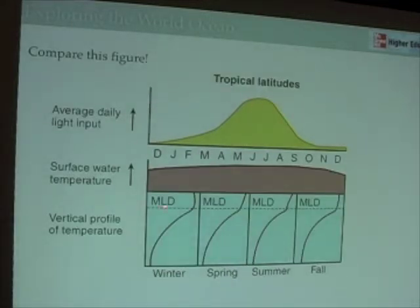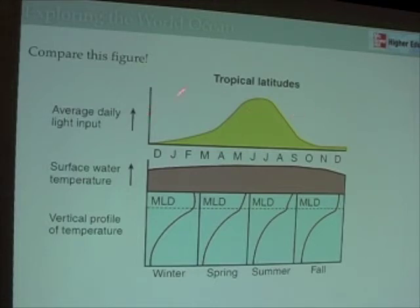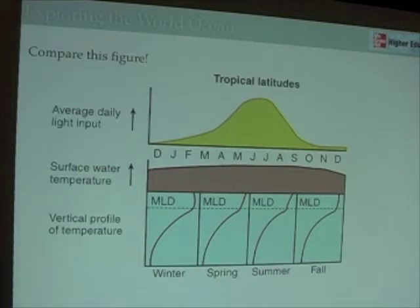If we look at tropical latitudes, what we see is endless summer — we always have a shallow mixed layer and we always have a thermocline. Note that figure 725 is incorrect; it should show sunlight through the entire year. In any case, the water temperatures are always warm and we always have a shallow mixed layer and a permanent thermocline at tropical latitudes.